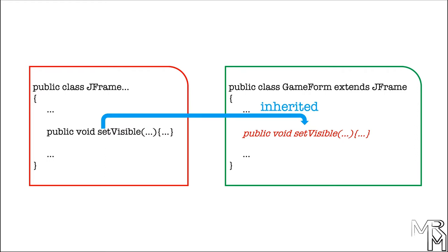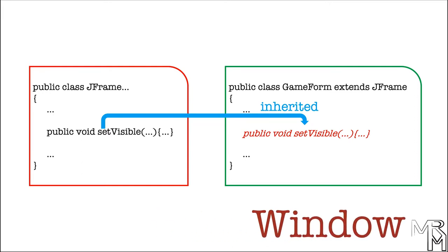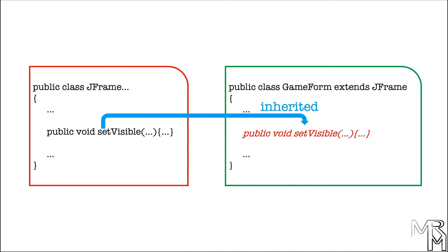Just to be a bit more precise, the JFrame class itself inherits the setVisible method from yet another class, called Window. In other words, subclasses inherit some of the superclass's members, including methods, which in turn means that subclasses can use some of the superclass's methods as their own. Too much copy-pasted code is bad, and inheritance is one of the ways to reduce it. Since GameForm is a JFrame, we can use JFrame's setVisible method without creating a separate setVisible method for GameForm.